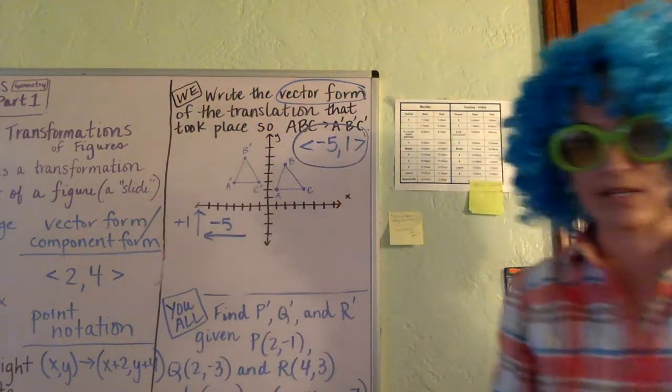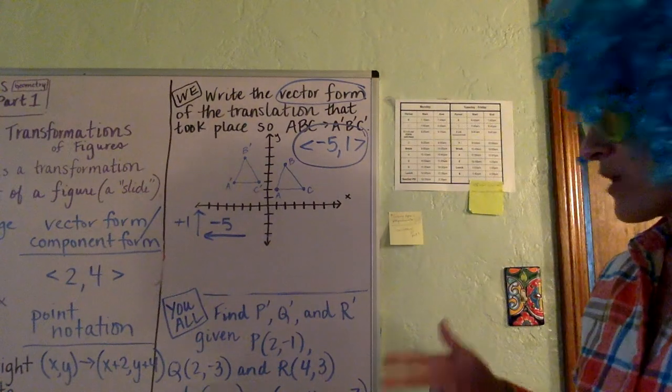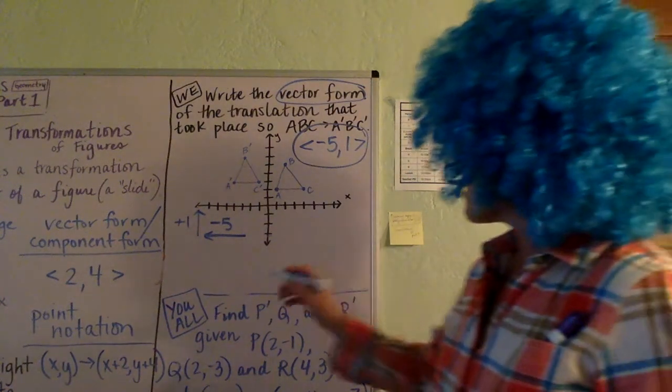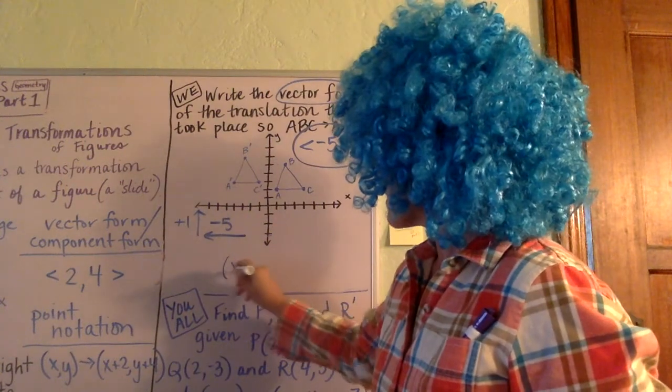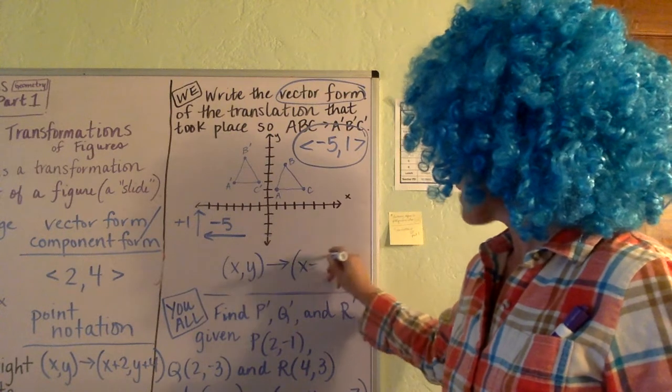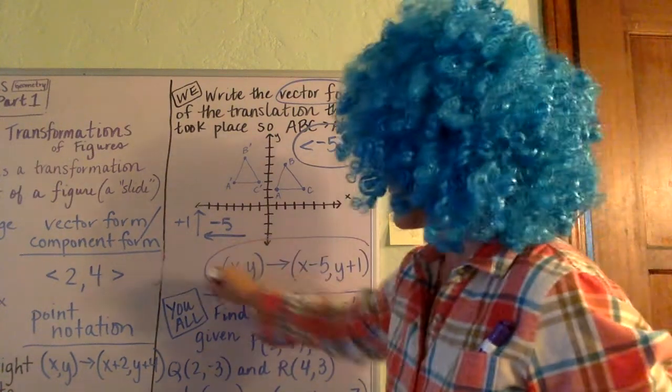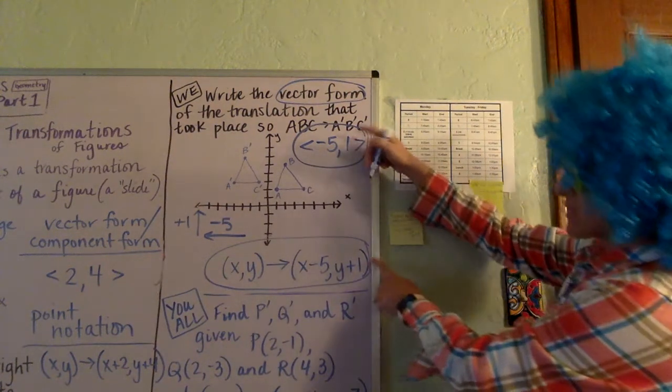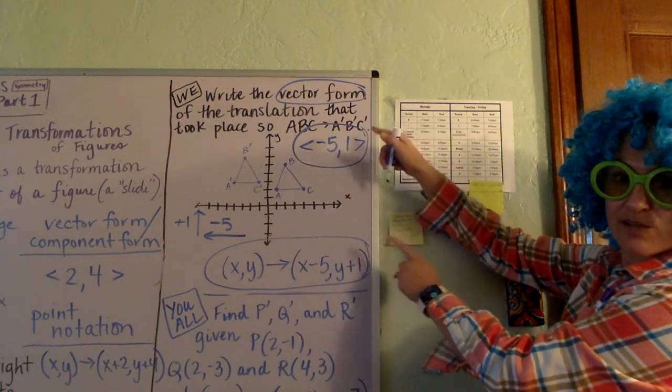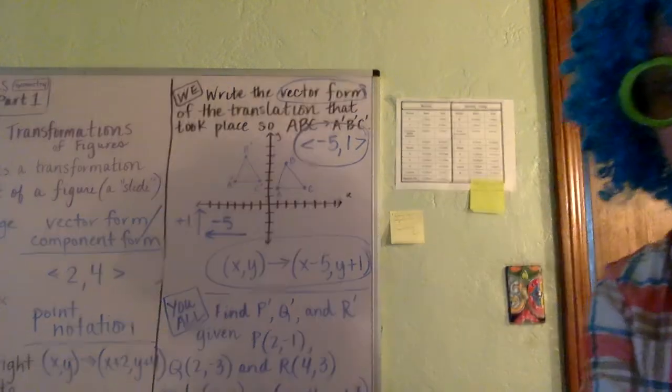And even though I didn't ask for it in this, let's go ahead and practice writing it in that point notation. So in point notation, to say exactly the same thing, we would say (x, y) slid to (x minus 5, y plus 1), okay? And just a reminder, these two things mean exactly the same thing. They're just different notations to communicate the same thing.